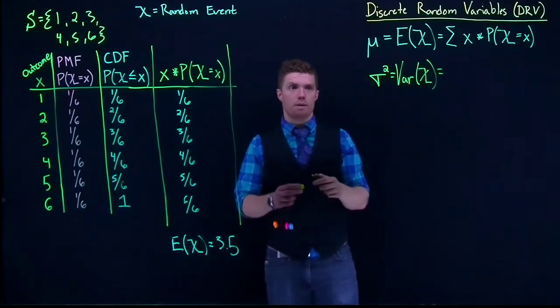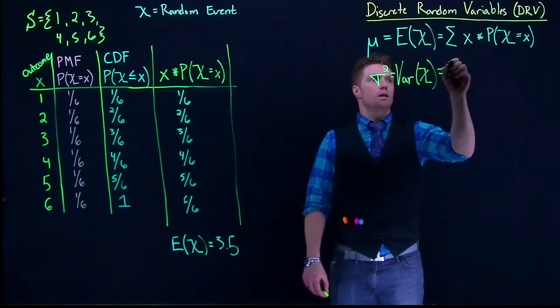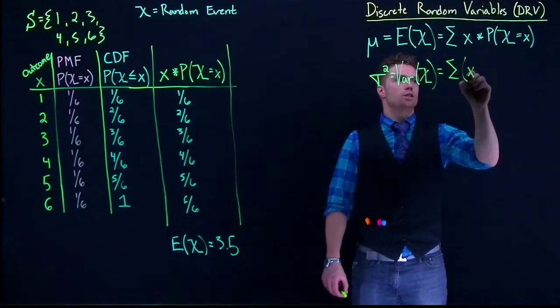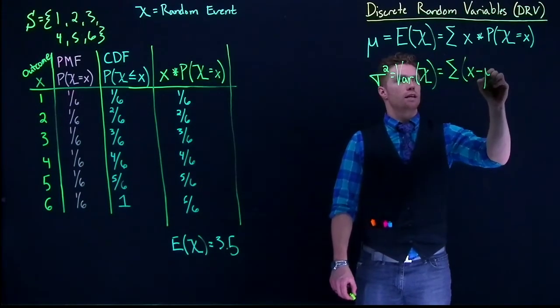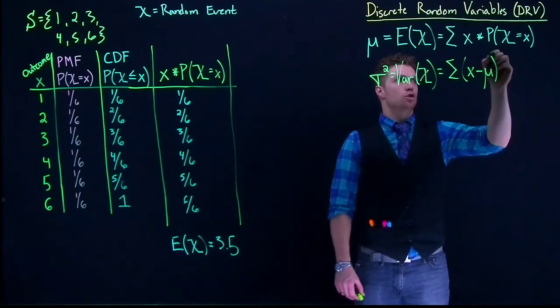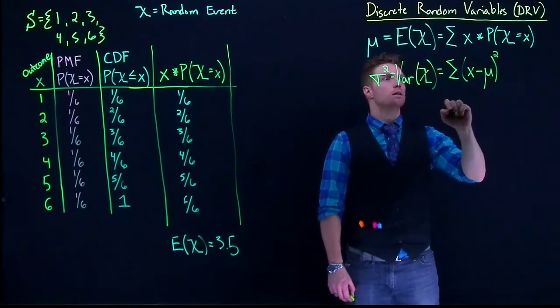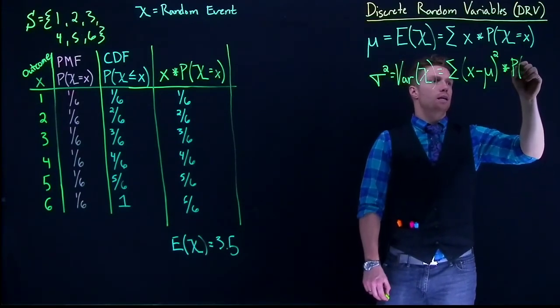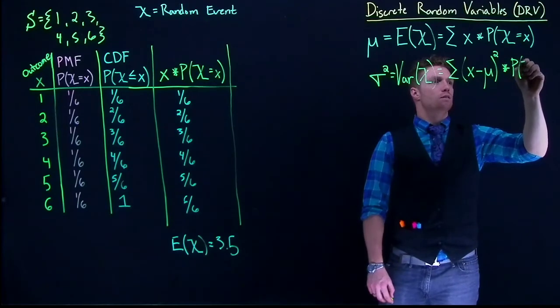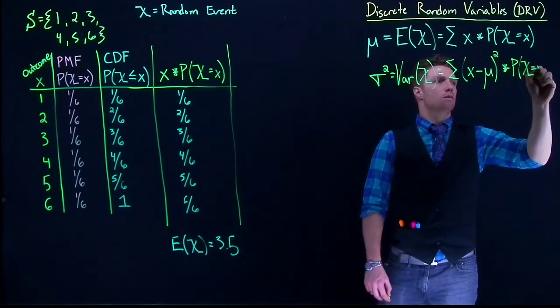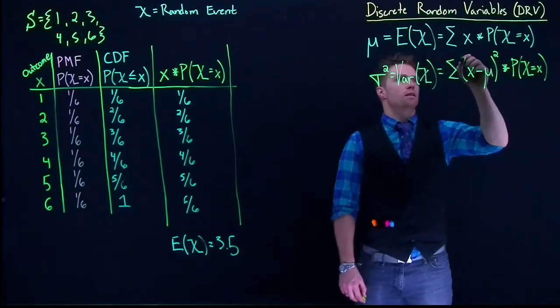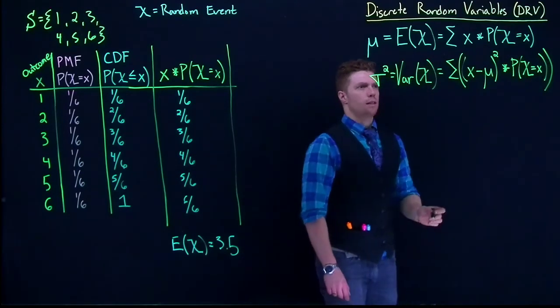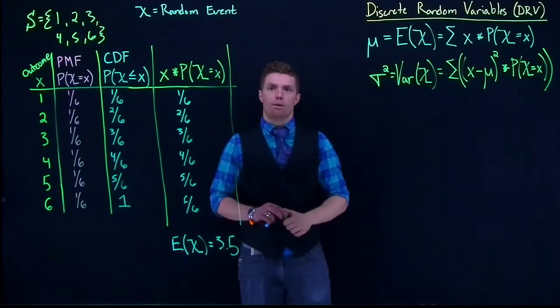All right, this is going to be another summation. It's going to be the sum of our observation minus the expected value, or mu, squared multiplied by its associated probability of success. And let's put that whole thing in parentheses like that. And that will give us our variance.